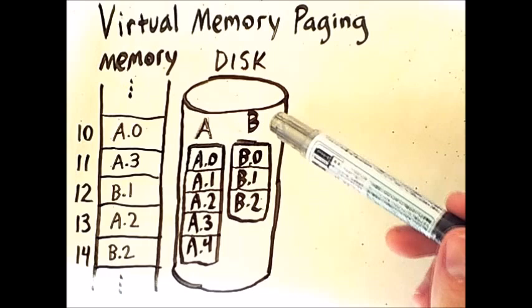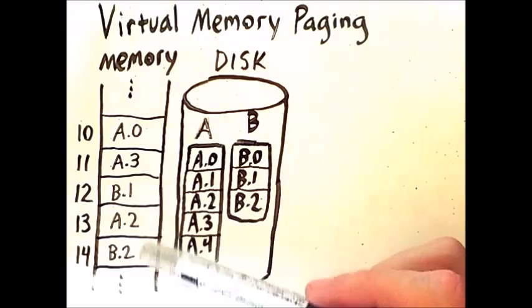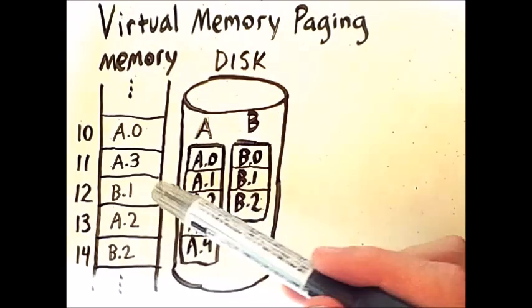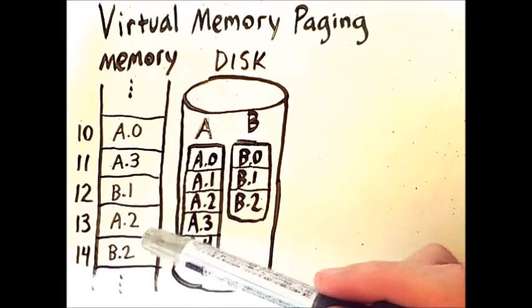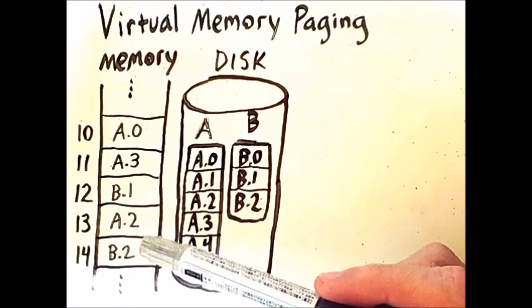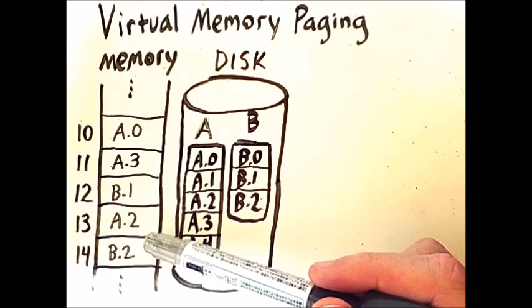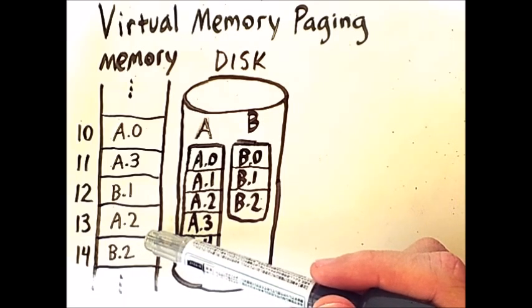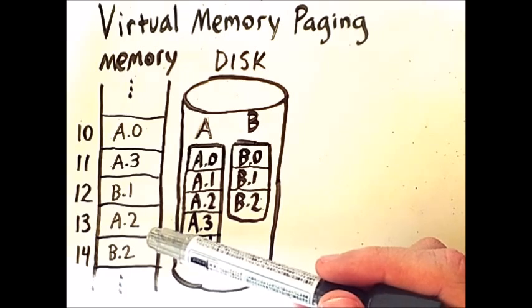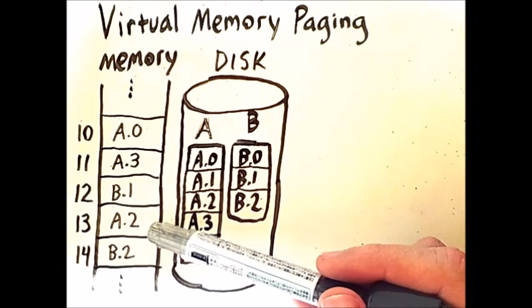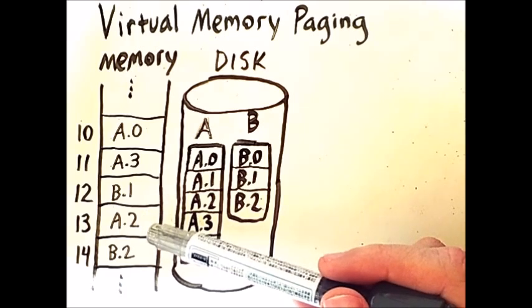Similarly with process B I have two of the three pages and they are not contiguous. Despite this, it is still possible for code associated with processes A and B to execute. And as long as these processes are currently focused on portions of the code that are present in memory, they can execute without problem.